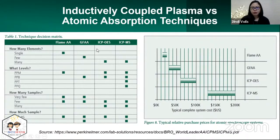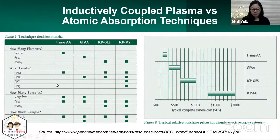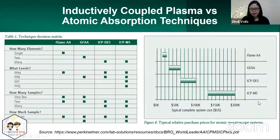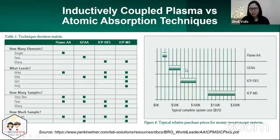When selecting between ICP and atomic absorption techniques, it depends on your goals. If you want to measure very low levels, use ICP-MS, because it can read down to PPQ levels. If you have many elements to test in a solution, ICP is also the way to go. However, ICP is more expensive than traditional AA. So if you don't have ICP, you can still use AA spectroscopy — just use whatever you have.